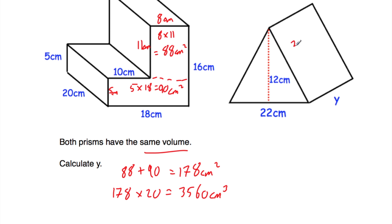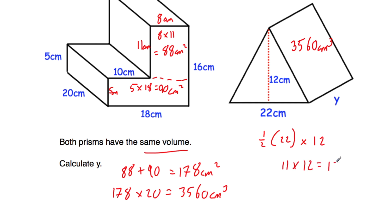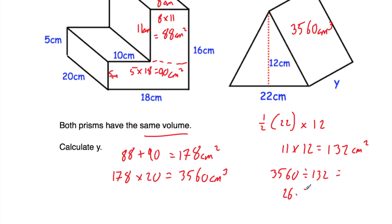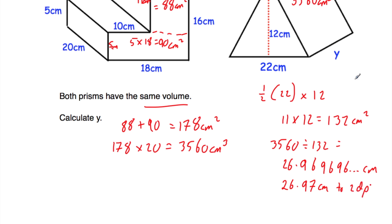So the triangular prism also has a volume of 3,560 centimetres cubed. Now we need the area of the triangular cross-section. The area of a triangle is half the base times the height. Half of 22 is 11, so we do 11 times 12, which is equal to 132 centimetres squared. Dividing the volume by the area of the cross-section: 3,560 divided by 132 is equal to 26.9696... centimetres. Rounding to two decimal places, y is equal to 26.97 centimetres.